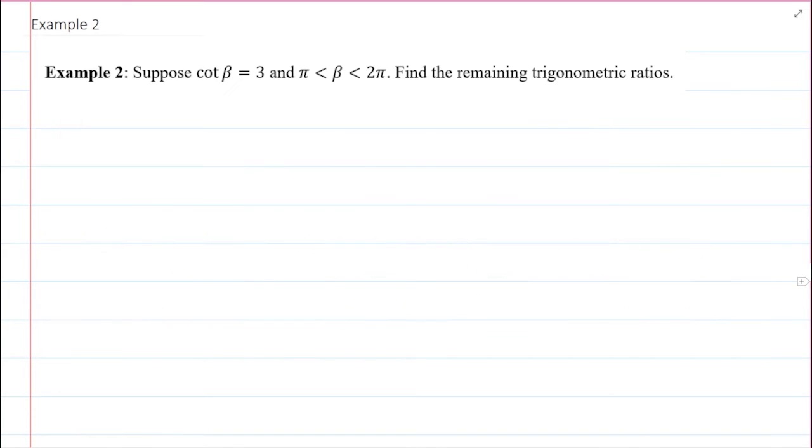Now, let's do a different example. You're given cotan of some angle equals 3, and you know that beta, that angle, is between pi to 2 pi. We don't know exactly where that is, but we're given a range for that.